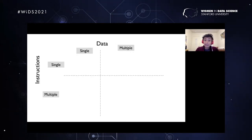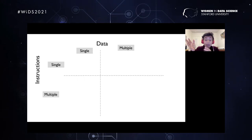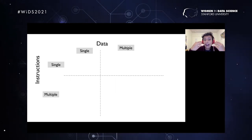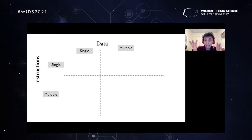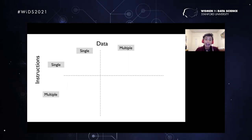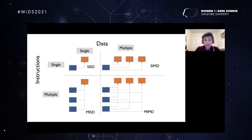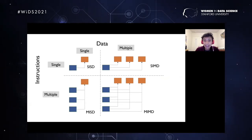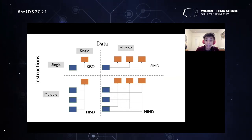This brings us to the first question: what happens when we have multiple tasks and multiple data? We need a framework to think about how to distribute work when we have multiple tasks and only one single data, or multiple data and one single task, or even multiple data and multiple tasks. That's where Flynn's taxonomy comes in. There are four different combinations: Single Instruction Single Data (SISD), Single Instruction Multiple Data (SIMD), Multiple Instruction Single Data (MISD), and Multiple Instruction Multiple Data (MIMD).